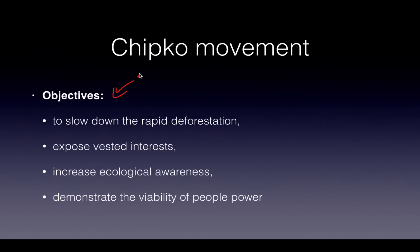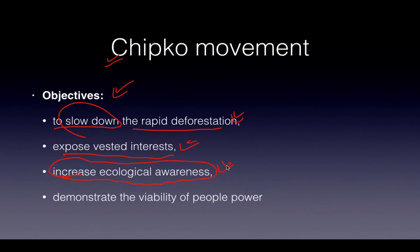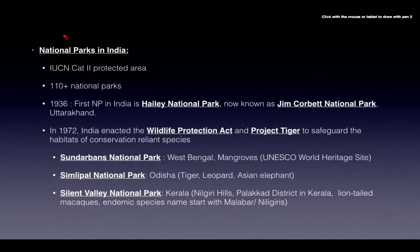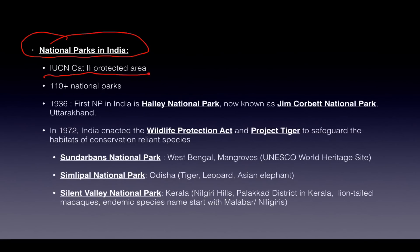The word 'Chipko' is a Hindi word meaning to hug or to stick to someone. The objectives of the Chipko Movement are: to slow down rapid deforestation, to expose the vested interests of the timber mafias, to increase ecological awareness among people about preserving trees, and to demonstrate the viability of people power. Now we will deal with national parks in India. They are IUCN Category II protected areas and there are 110 plus national parks in India.